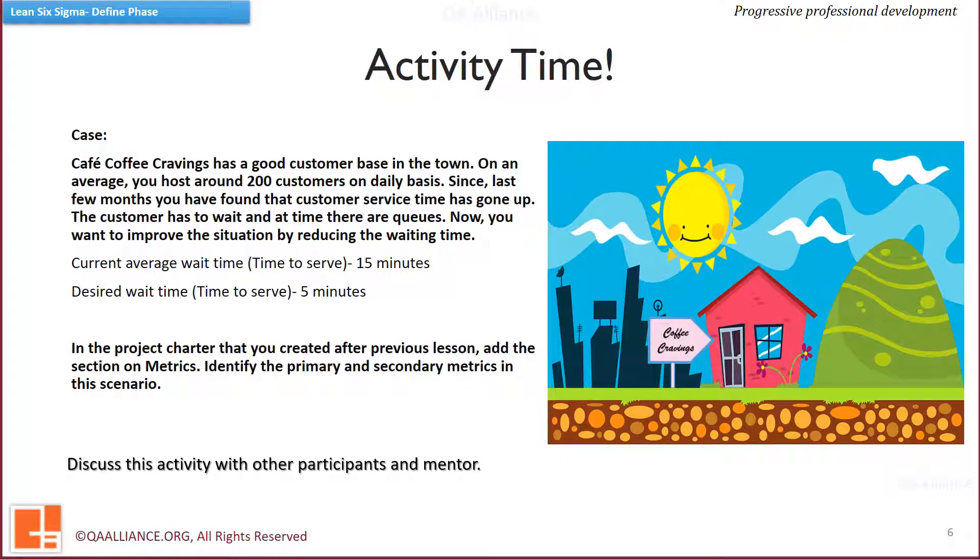Let us again go to the case that we discussed in previous lessons. Your cafe, Coffee Cravings, has a good customer base in the town. On an average, you host around 200 customers on daily basis. Since last few months you have found that customer service time has gone up. The customer has to wait and at times there are queues. Now, you want to improve the situation by reducing the waiting time.